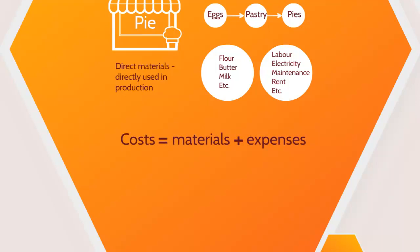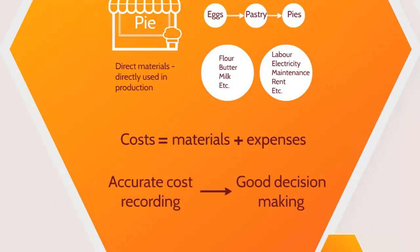The reason it's important to get costing right is because accurately recording the cost of an item plays a really key role in the decision making process. For example, how can the pie shop determine how much they need to sell a pie for if they don't have an accurate figure for the cost of producing it? So you can see there's a lot more to cost than you may have initially thought, and we've seen how useful costing is to a business and how a business might choose to group their costs.